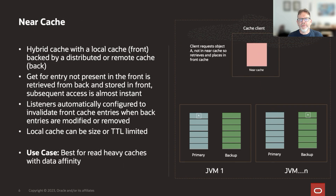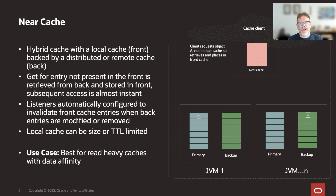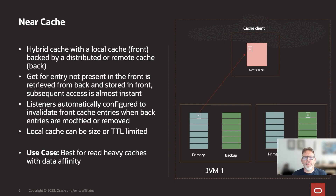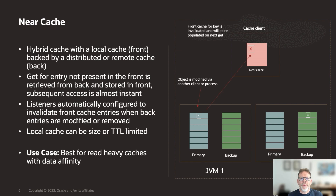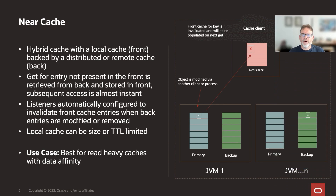Near caches comprise of a front and back cache, typically a size-limited local cache in the front and a distributed or remote back cache. When a requested entry is not present in the front cache, it is retrieved from the back cache and then stored locally in the front cache. Subsequent cache accesses will be instantaneously served from the near cache. Coherence automatically sets up listeners to invalidate the front cache when a change is made in the back cache. This cache type is best for heavy read caches with data affinity.